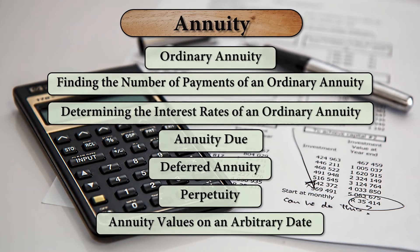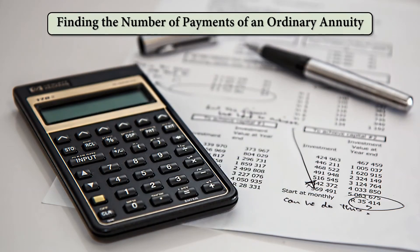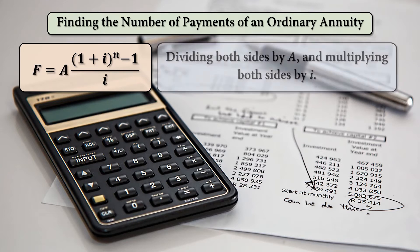Our second subtopic under the annuity is finding the number of payments of an ordinary annuity. We are finding for F if A is given, and we have to divide both sides by A and then multiply both sides by I. The goal here is to find the formula for N.